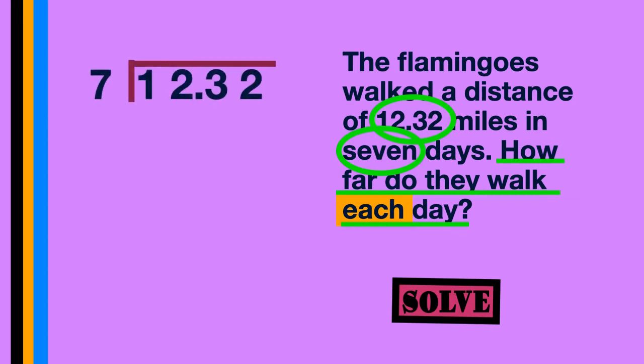Now, we can begin to divide. 7 into 12 goes once. 7 times 1 is 7. Now, we can subtract. But before we subtract, we need to rename. Because 7 cannot go into 2. So we need to rename this 1 to a 0, and rename this 2 to a 12. 7 from 12 leaves 5.